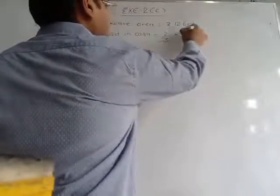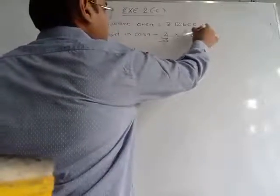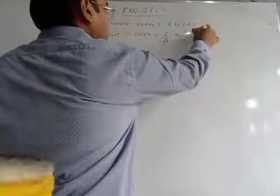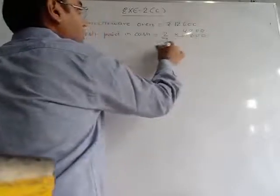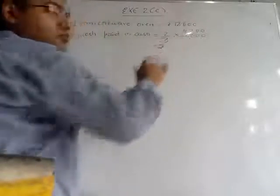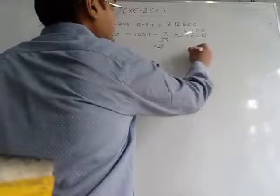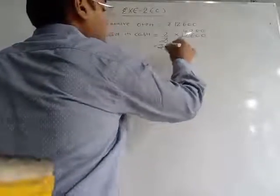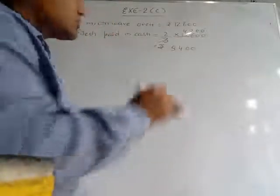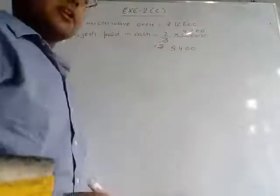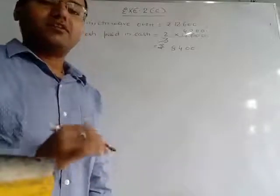The twos get cancelled. On multiplying these two numbers we will get 8,400 rupees. So this much money he had given in cash.